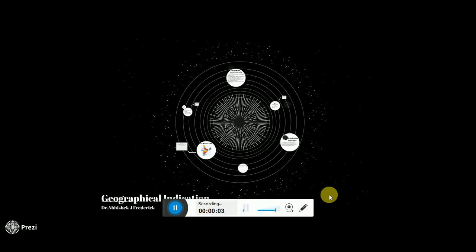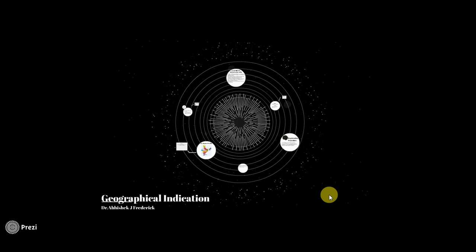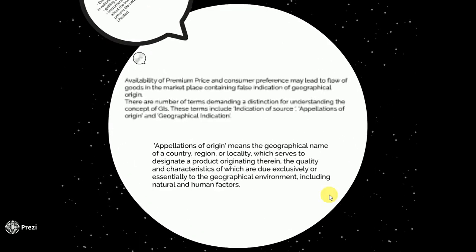Good evening friends. The topic which I have chosen in this web series of IPR, episode 3, is Geographical Indication. Today we will be discussing what is Geographical Indication and what is the importance of Geographical Indication. There are a number of terms demanding a distinction for understanding the concept of GI. These terms include indication of source, which means like 'made in India' or 'made in US', appellation of origin, and Geographical Indication.